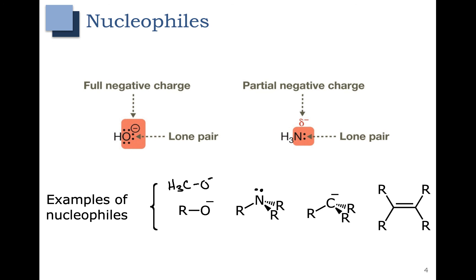Here's another good nucleophile: a carbon with a negative charge. We are going to talk about more examples of what we could represent here with the negative charge. In our last example we have a double bond. A double bond has pi electrons that can be nucleophilic. You have an example of a double bond here that can react with positively charged species, and we're going to see a lot of reactions where this pi bond can react as a nucleophile.